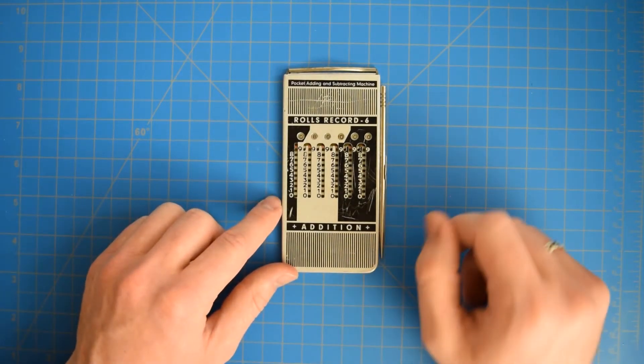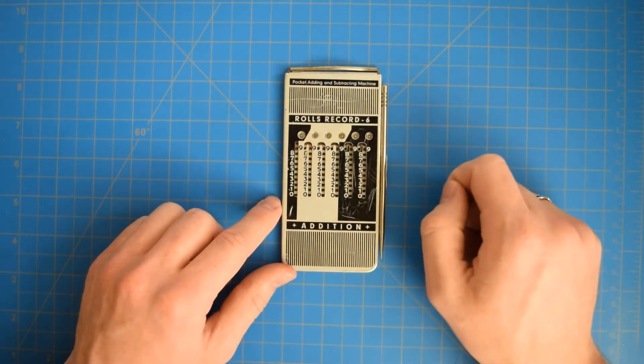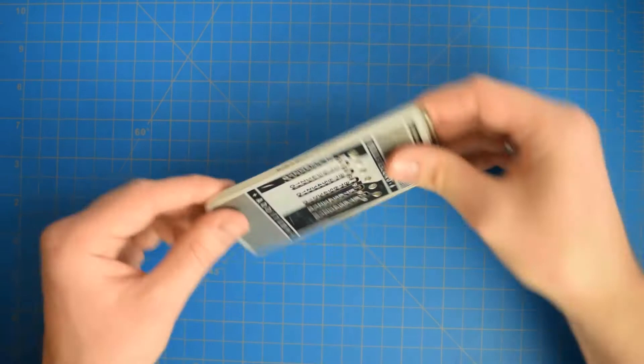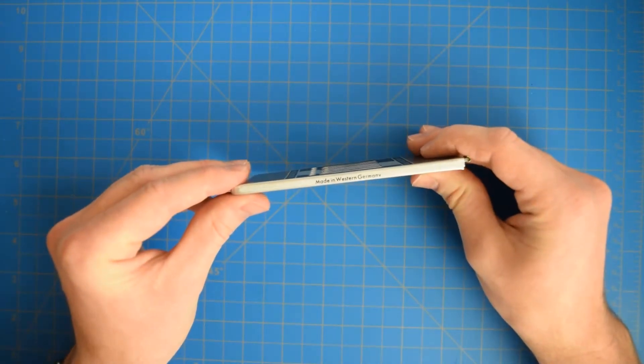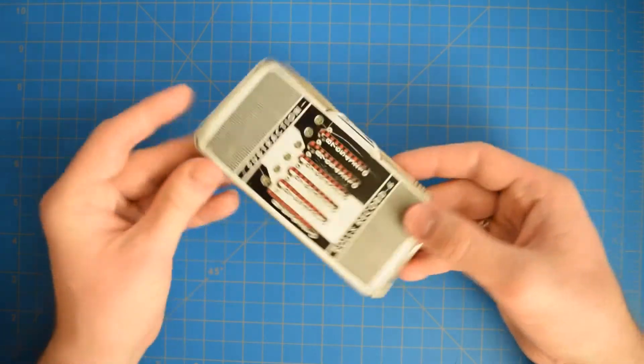Hello, Austin from Dragon Co again. Here we have an old numbers machine. Pocket adding and subtracting machine fits perfectly in the shirt pocket. On the side it says made in West Germany, which gives us some indication of the time period, though there is no exact date on it.